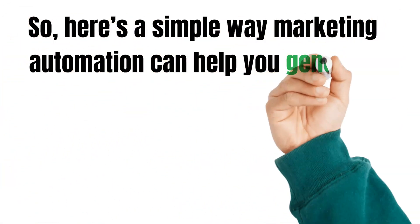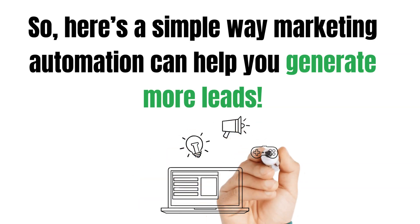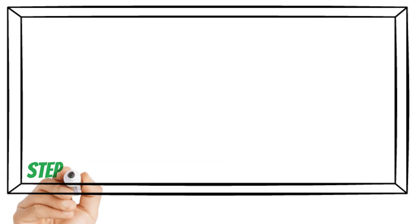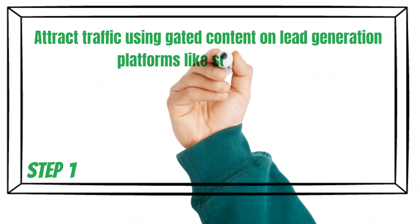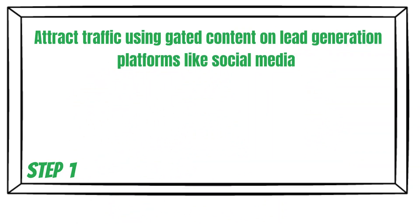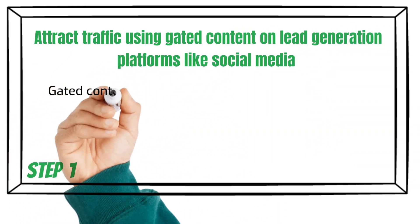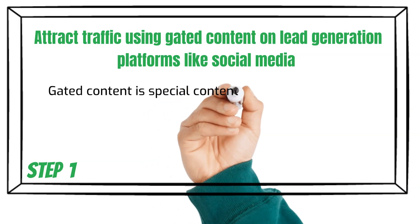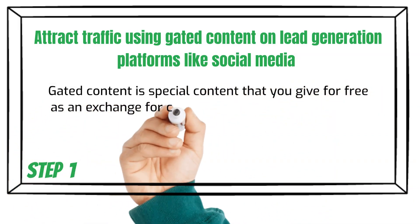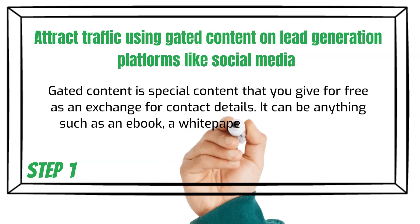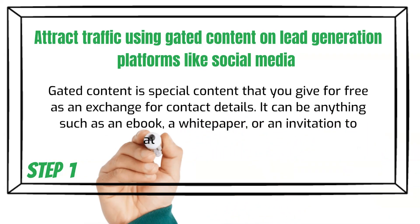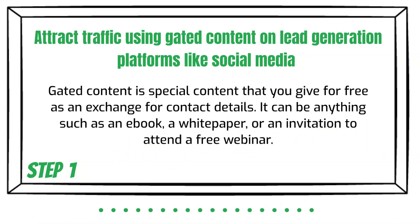Here's a simple way marketing automation can help you in lead generation. Step 1: Attract traffic using gated content on lead generation platforms like social media. Gated content is a special type of content that you give for free in exchange for contact details. It can be anything such as an e-book, a white paper, or an invitation to attend a free webinar.